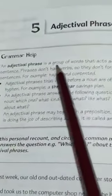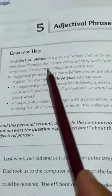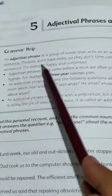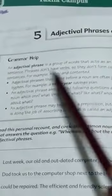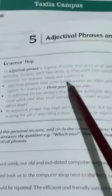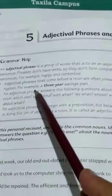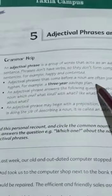An adjectival phrase is a group of words that act as an adjective in a sentence. Phrases don't have verbs so they don't form complete sentences. For example, happy and contented. Adjectival phrases that come before a noun are often joined with a hyphen. For example, a three-year saving plans.